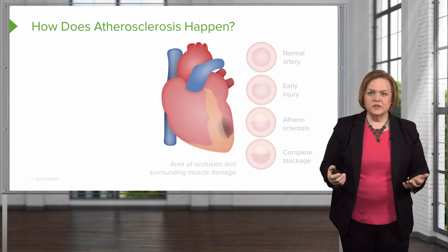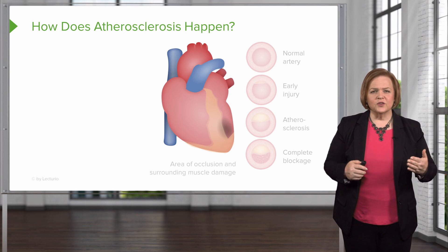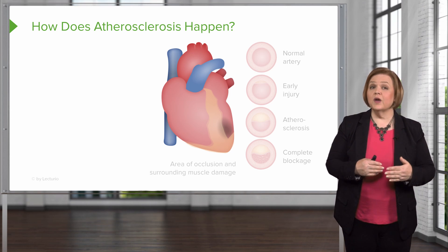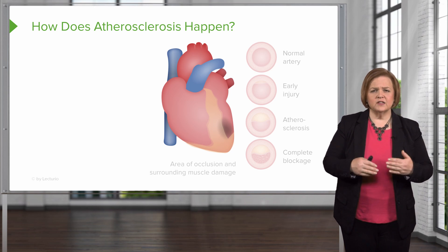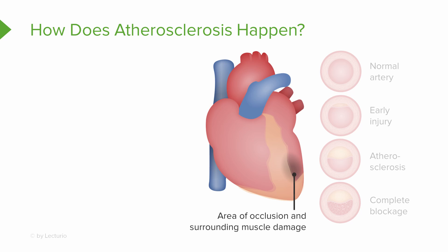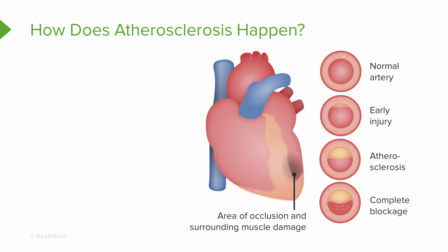So how do we end up in this state? I want to walk you through step by step what happens over a relatively long period of time. Look at the heart there — that black area is to remind you that's an area where an occlusion happened, where it's been completely blocked off and the surrounding muscle tissue is damaged. The reason it's damaged is because it blocked off the blood supply to the muscle. Starting at the top in our vessels: you have a normal artery, then an early injury, then the atherosclerosis buildup, and the bottom one is a complete blockage. That's what leads to that damaged or infarcted tissue.